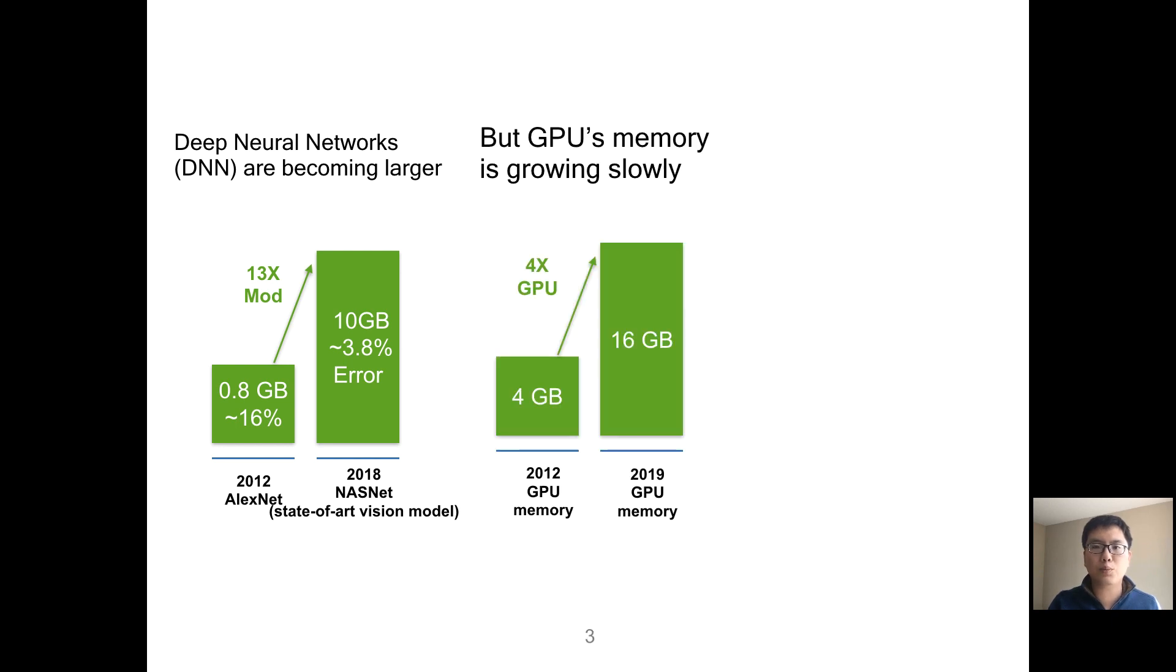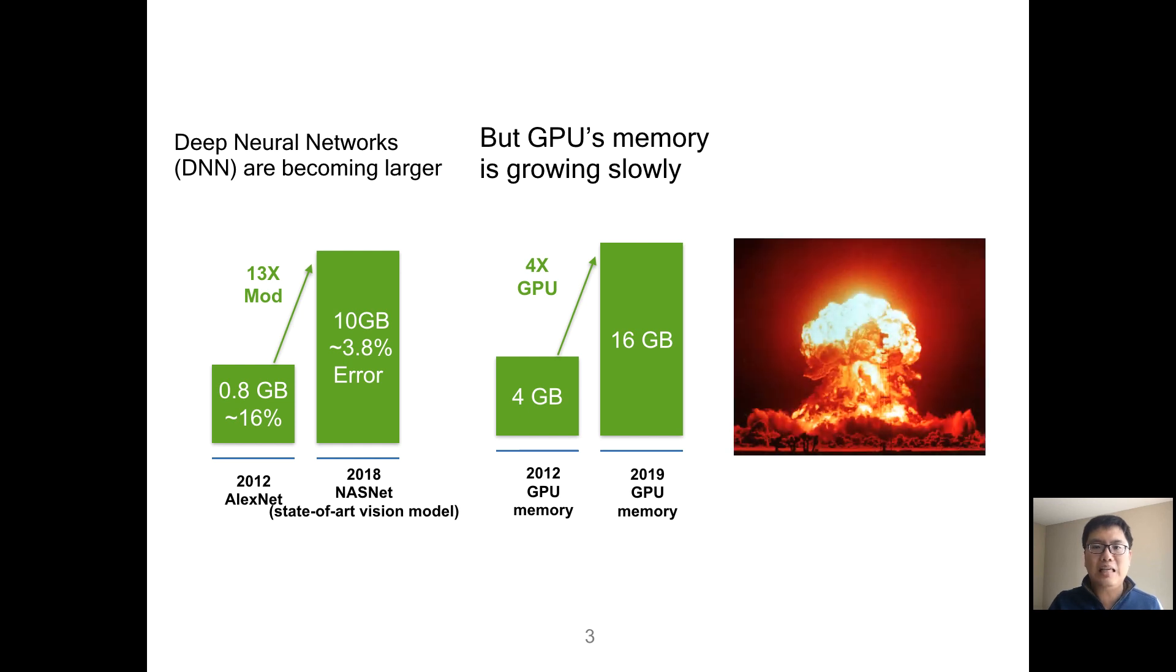Unfortunately, the GPU memory growth rate is slower than what we would like. Between 2012 to 2019, GPU memory only grows four times. Some proposed models like Y-ResNet do not fit on a single GPU. How are we going to train even larger models with limited GPU memory?